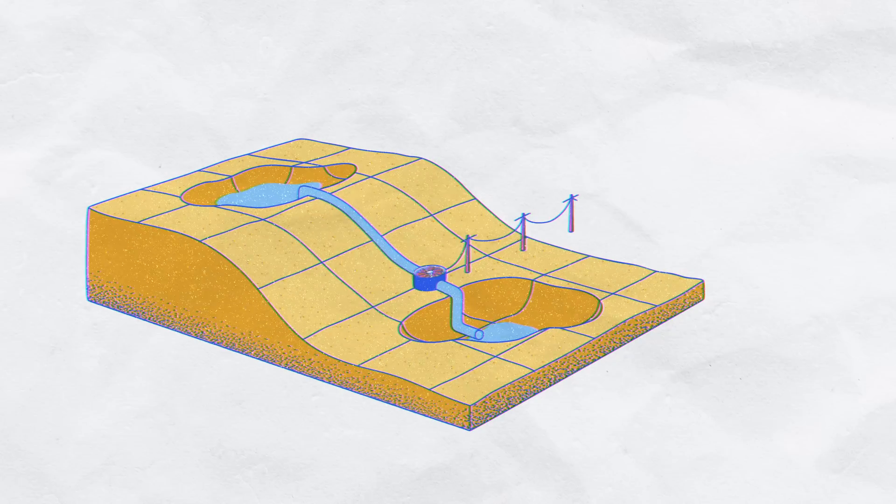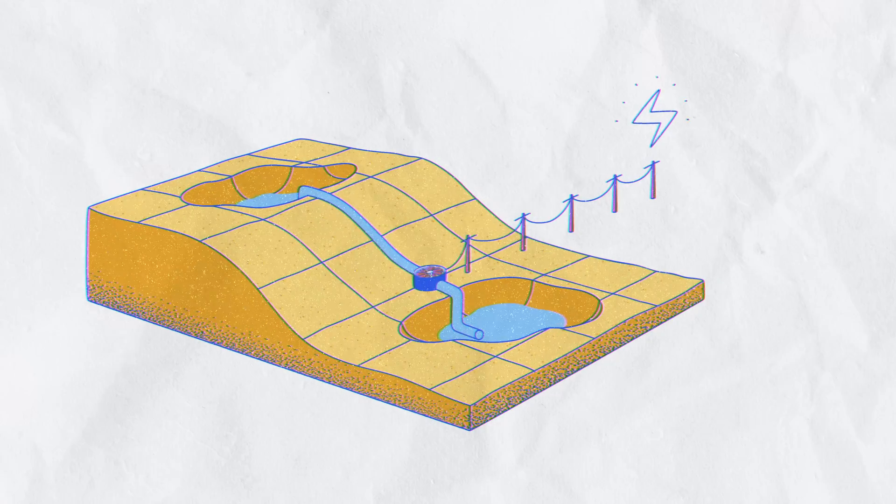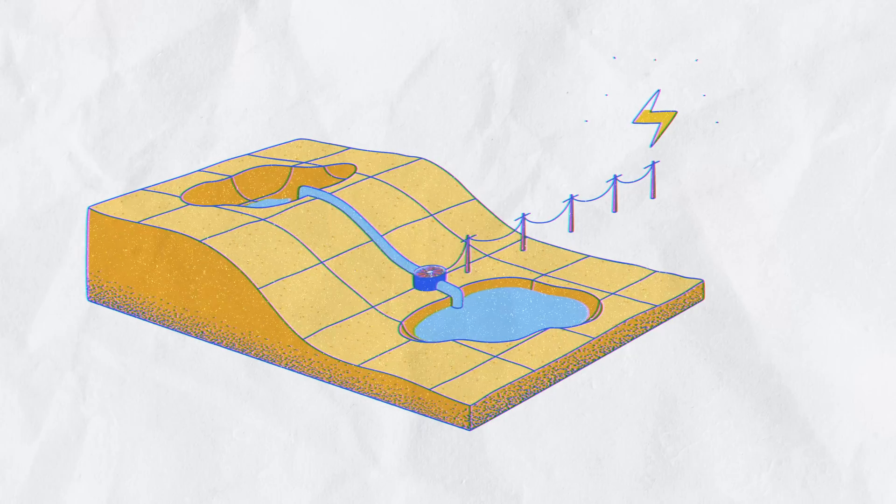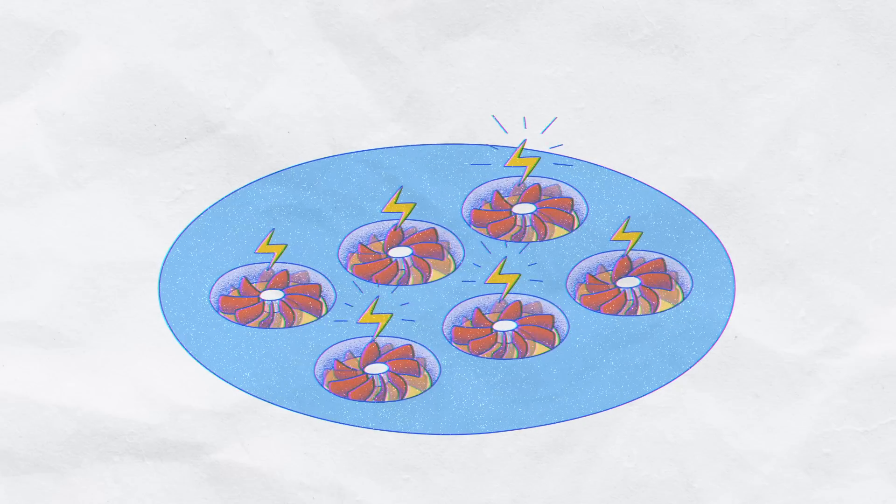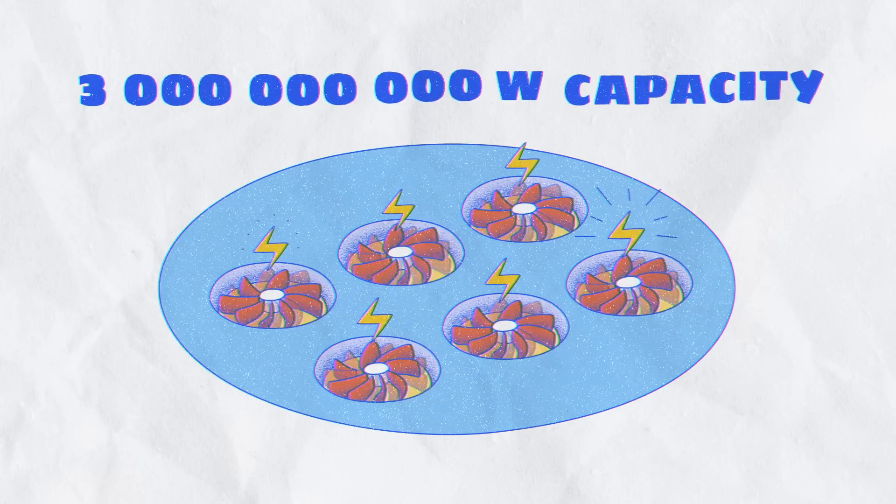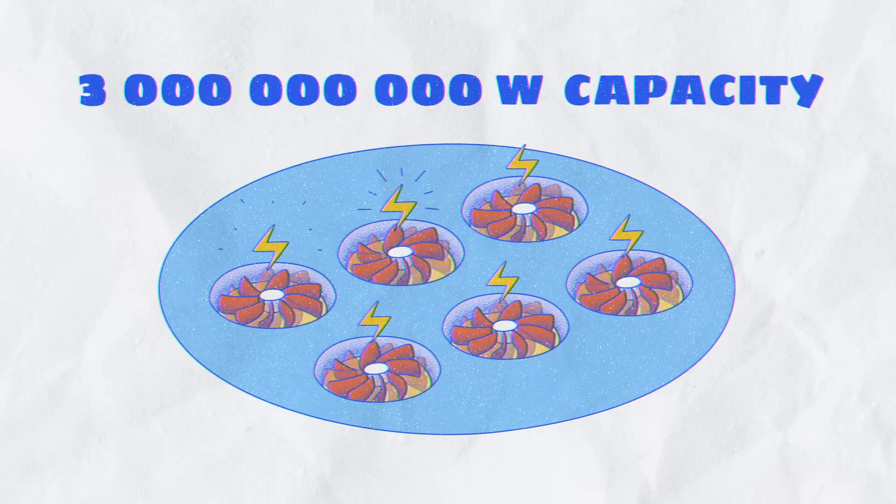Then, when there's high demand for electricity, valves open, releasing the stored energy by letting water flow downhill to power six giant turbines that can generate 3 billion watts of power for 10 hours.